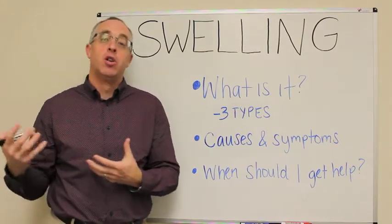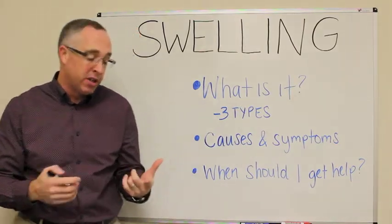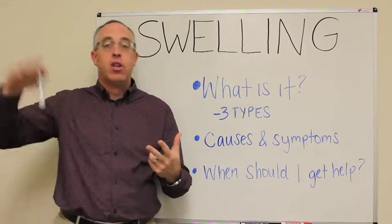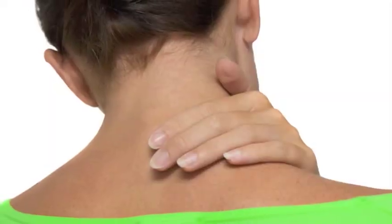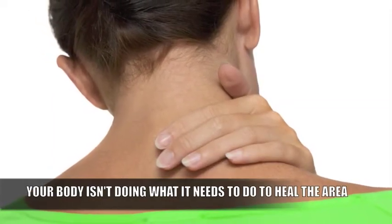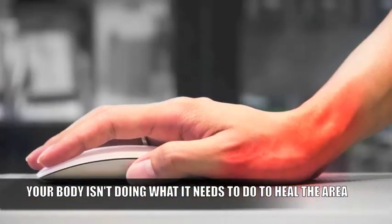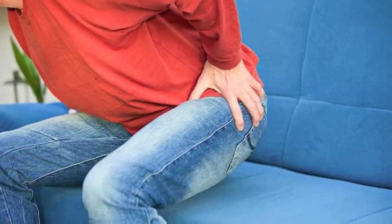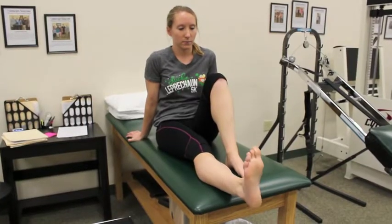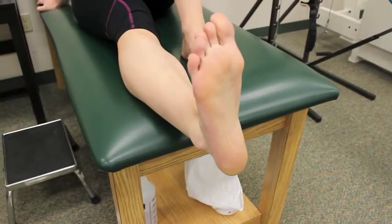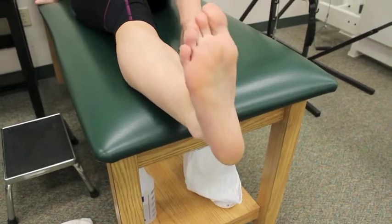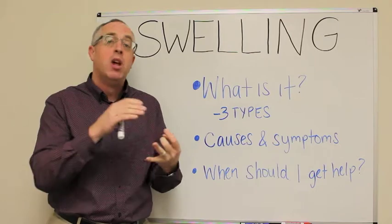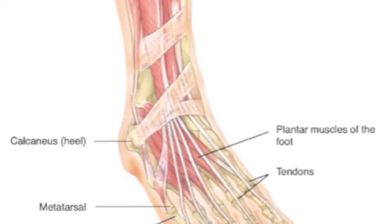When that doesn't happen, that's chronic inflammation — swelling that either lasts more than 24 hours or comes and goes over time. Chronic inflammation is a sign that your body isn't doing what it needs to do to heal the area. The swelling stays in the joint, keeps it tight, causes ongoing pain and soreness, makes it difficult to walk normally, and worst of all, restricts the blood flow that would help ligaments, bone, and other tissues begin their healing process.